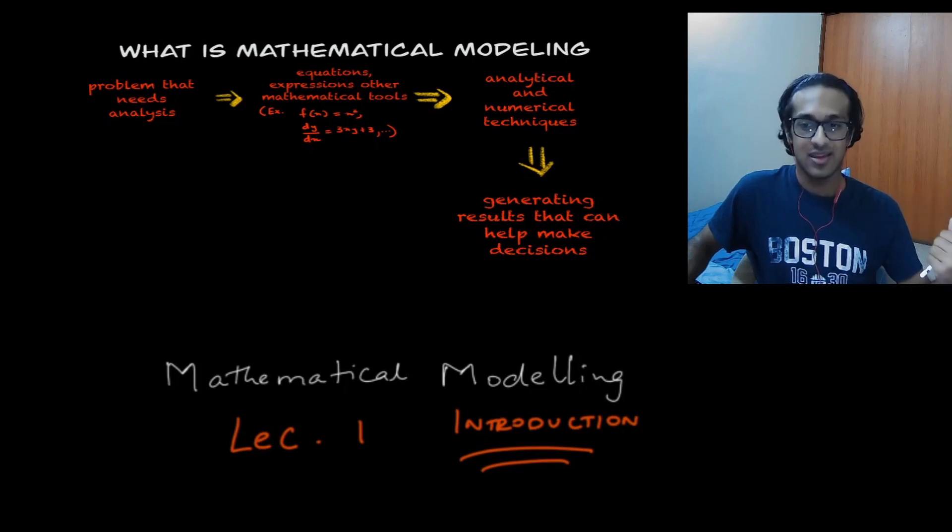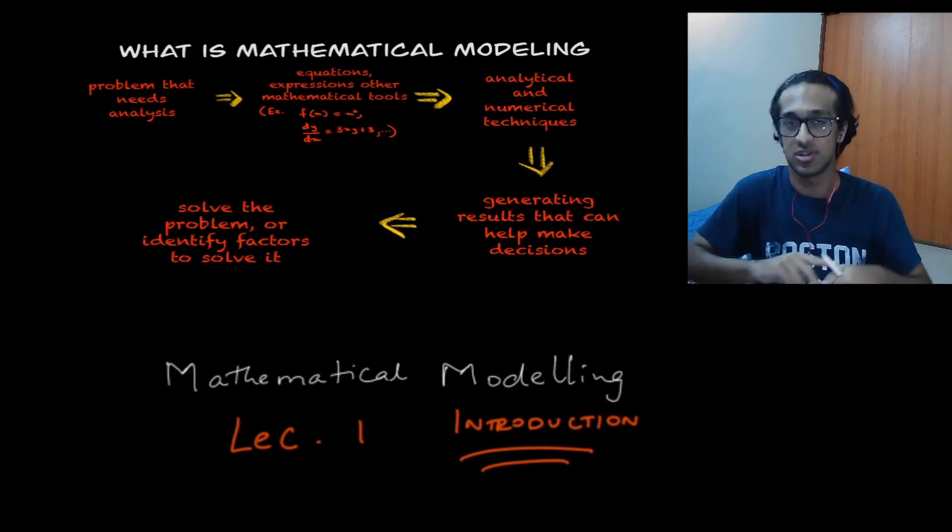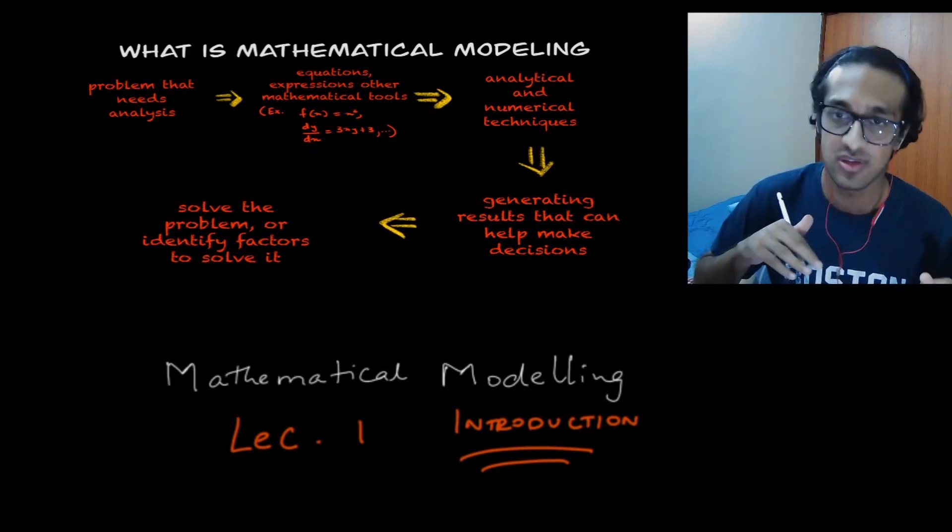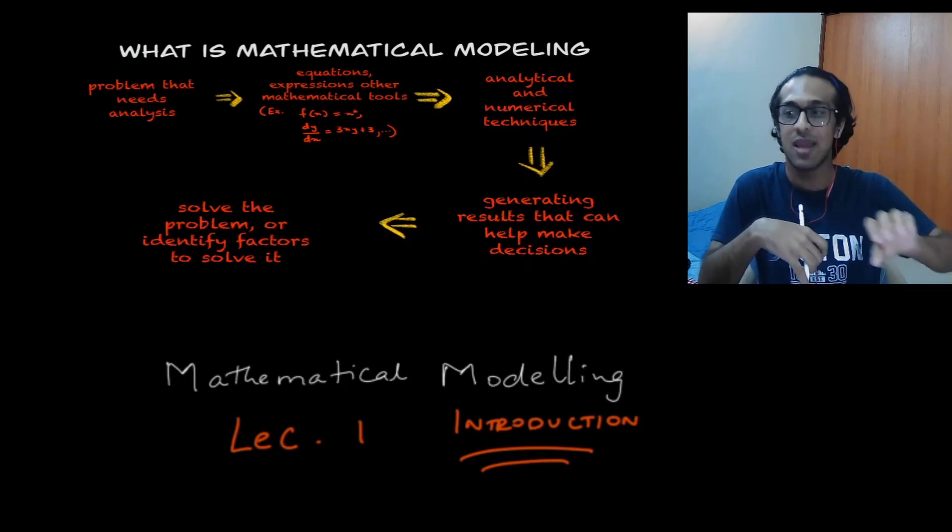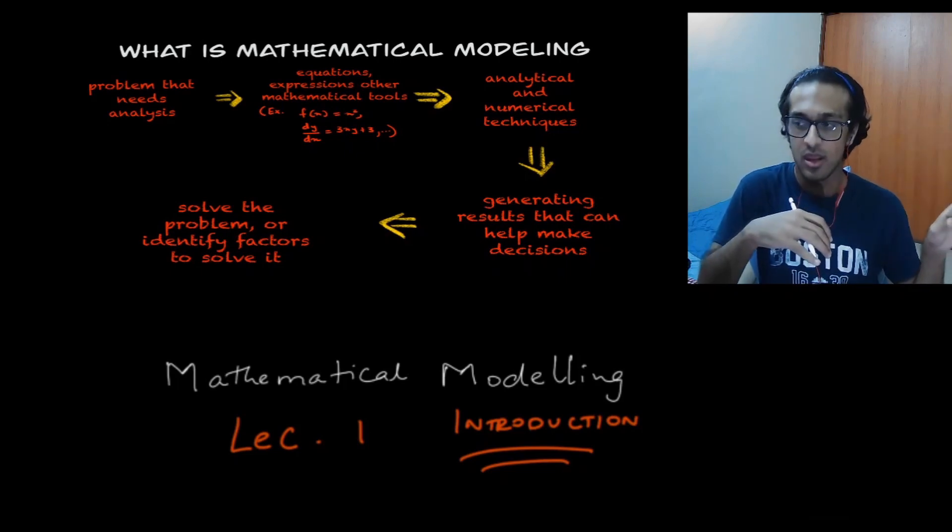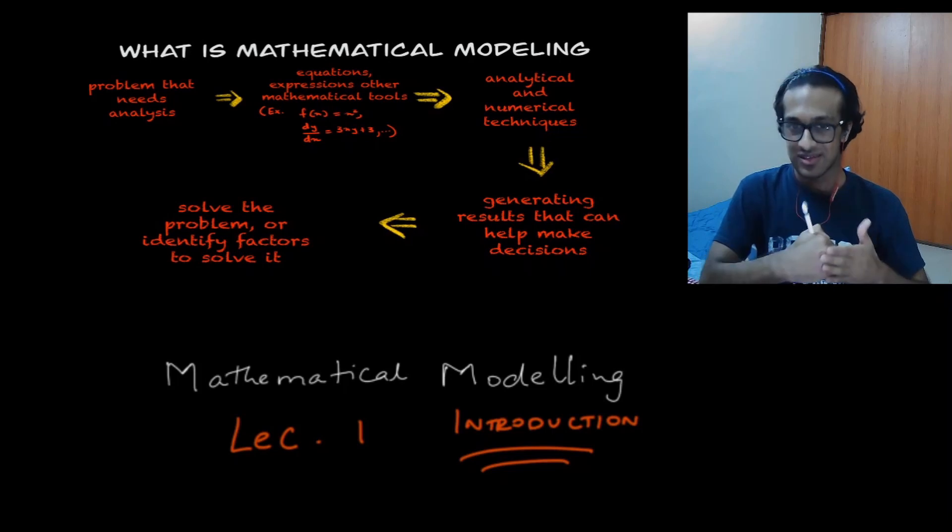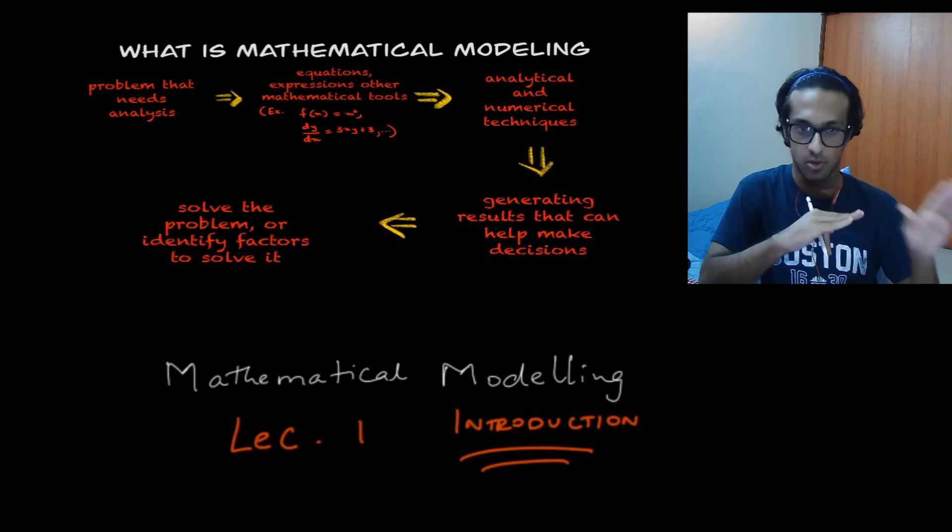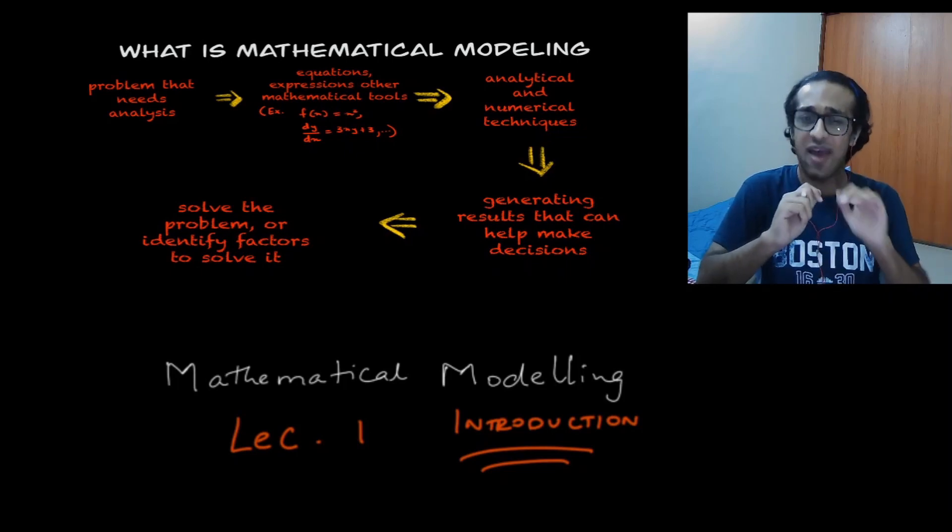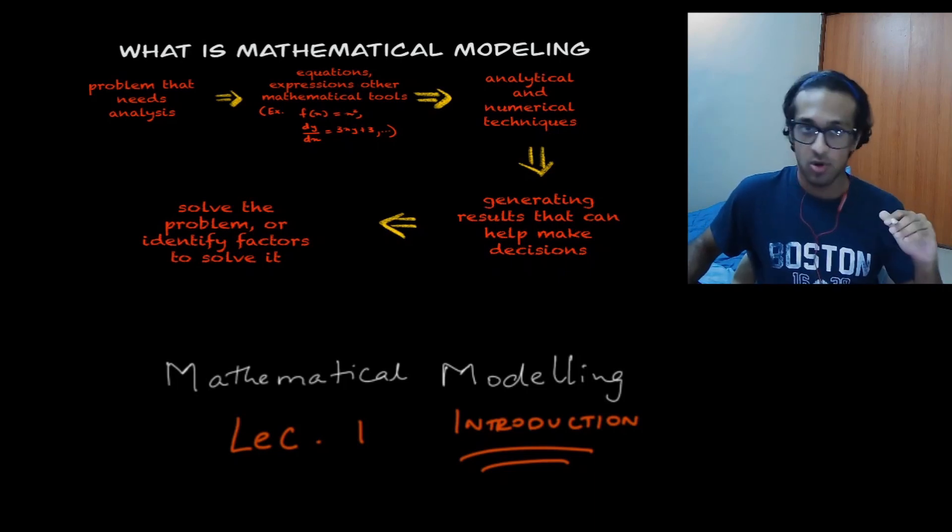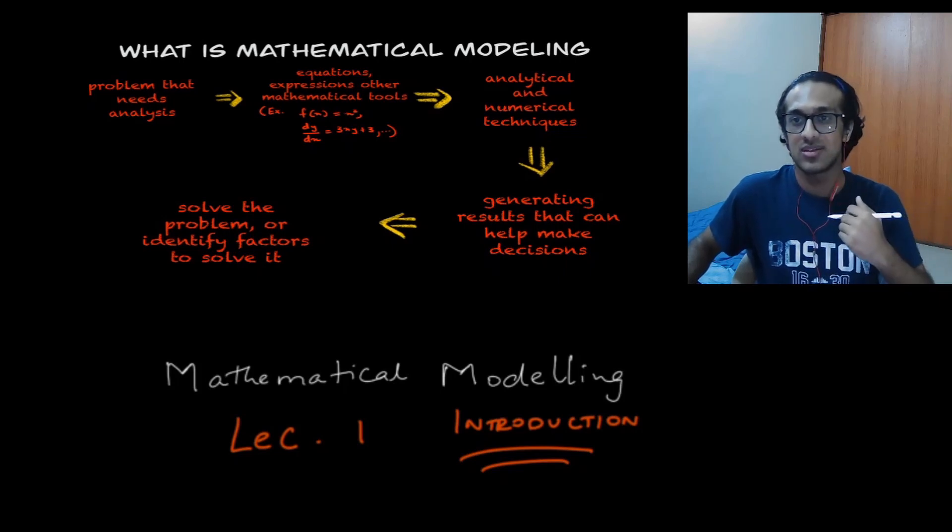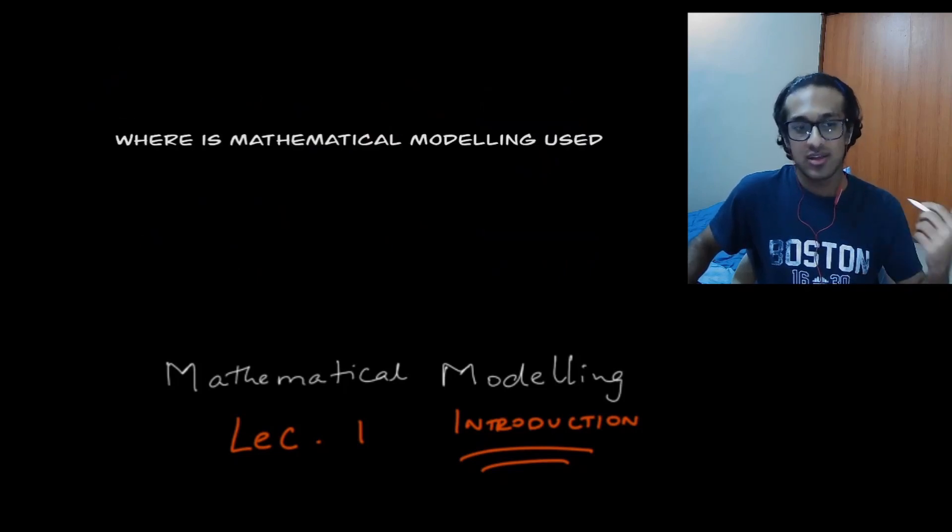And that gives rise to a bunch of results that can help us make decisions. So the graphs you saw in the very beginning of this video, are in fact the results that were generated from some mathematical models that describe the COVID-19 pandemic. So once we have these results, we basically hope that these results help us solve the problem or identify key factors that would help us in solving the problem. But it's not always possible for us to entirely solve the problem. And that is something that you need to understand as somebody who does mathematical modeling.